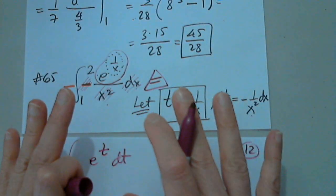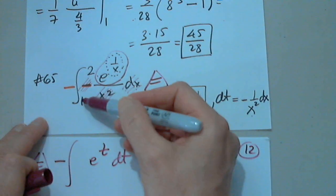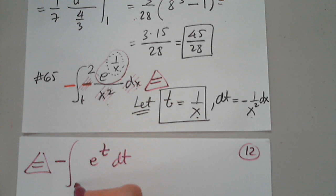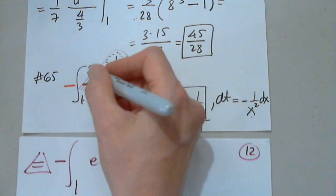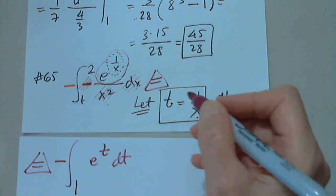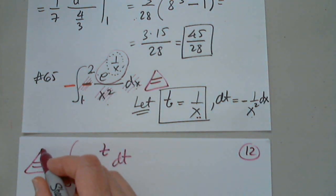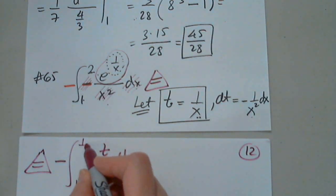Yes. And now stop. Be careful, careful. When x is 1, how much is t? 1. Perfect. The upper limit, when x is 2, how much is t? 1 half. Perfect.